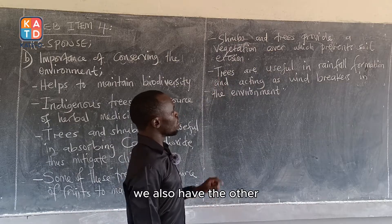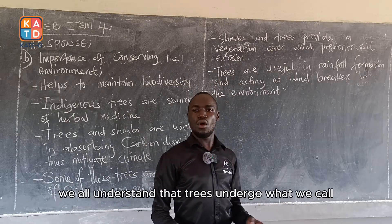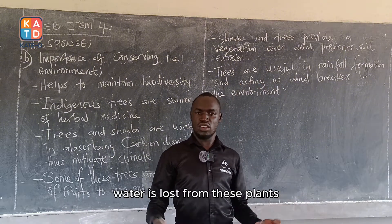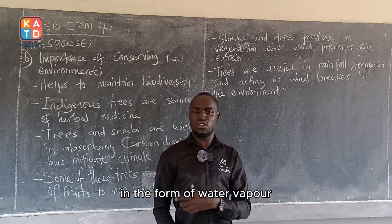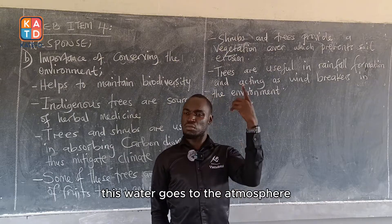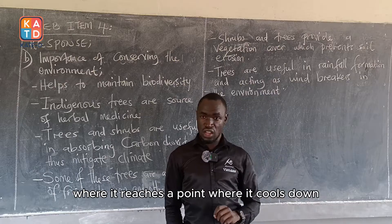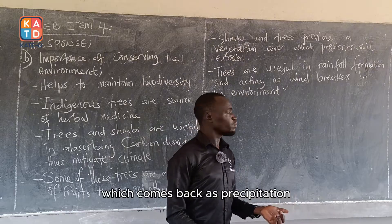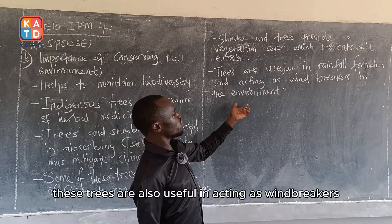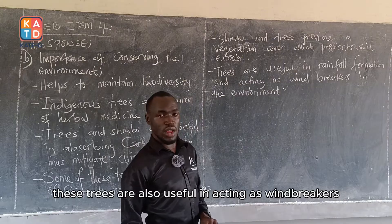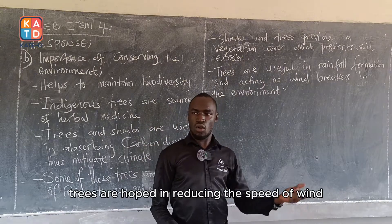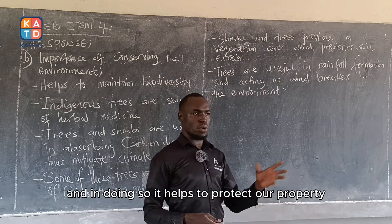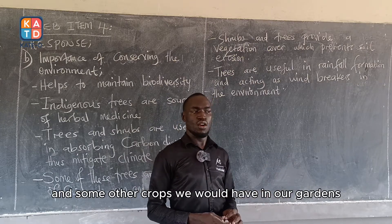Trees are also useful in rainfall formation. Trees undergo transpiration, where water is lost from plants as water vapor, goes to the atmosphere, cools down, condenses, and comes back as precipitation — rainfall. Trees are also useful as windbreakers: during strong winds, trees help reduce the speed of wind, protecting property and crops in the surrounding area.